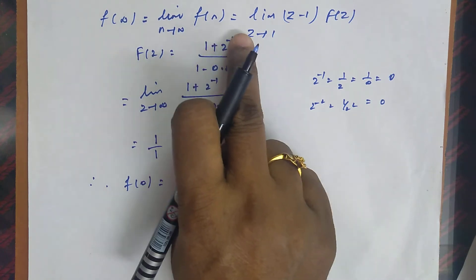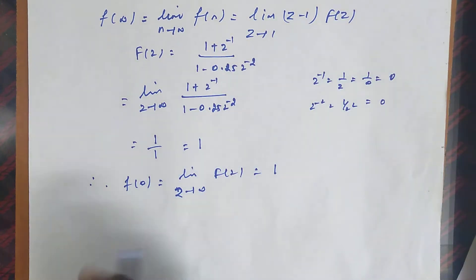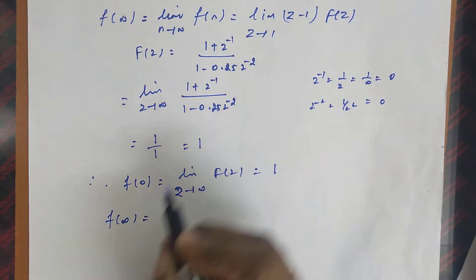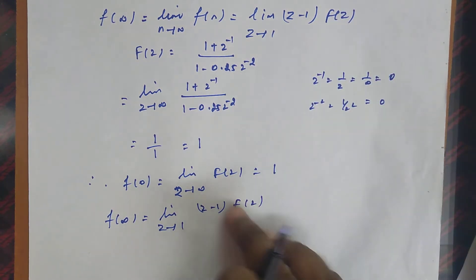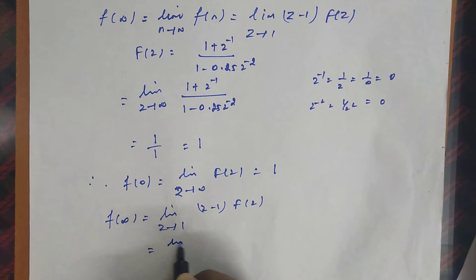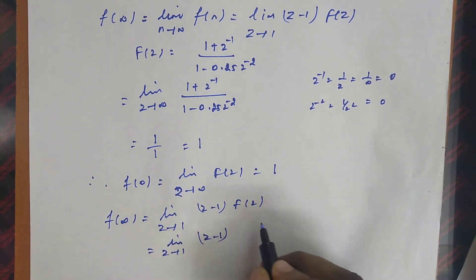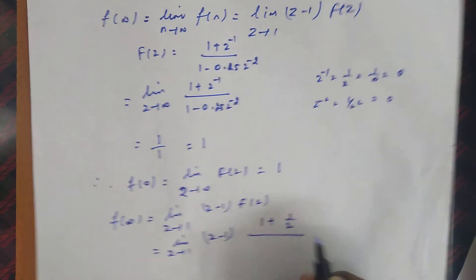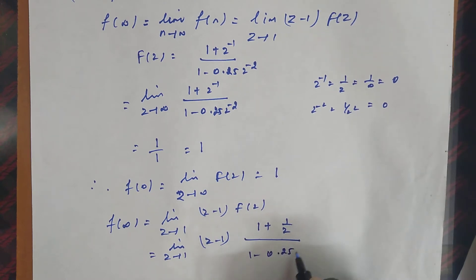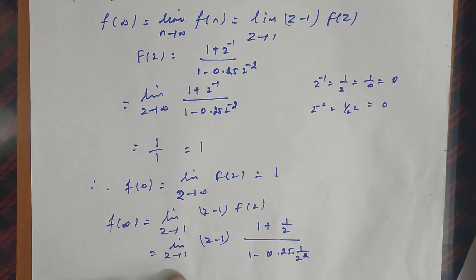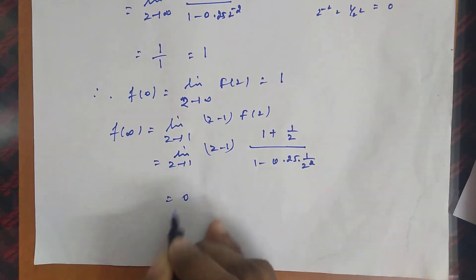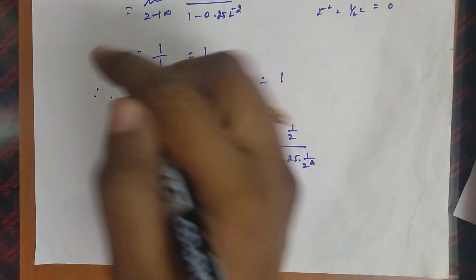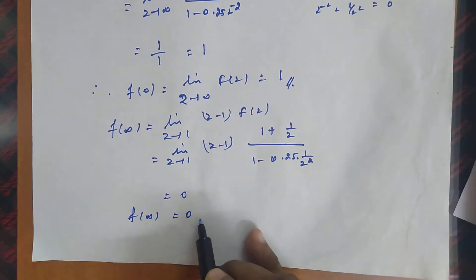Now for the final value: by the final value theorem, f(∞) equals the limit as z tends to 1 of (z - 1)·F(z). Substituting the given F(z), we get limit z→1 of (z - 1)·(1 + z⁻¹)/(1 - 0.25z⁻²). When z tends to 1, the factor (z - 1) becomes 0, and 0 times anything is 0. So our final value f(∞) equals 0.